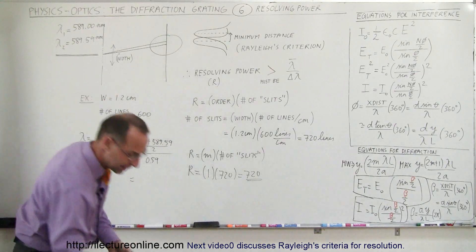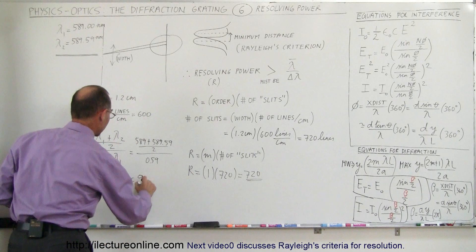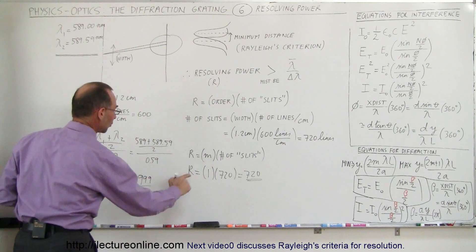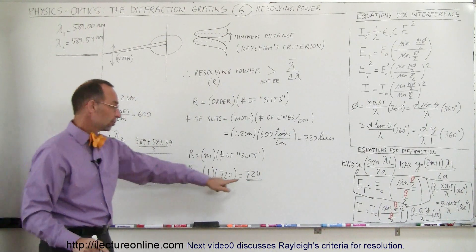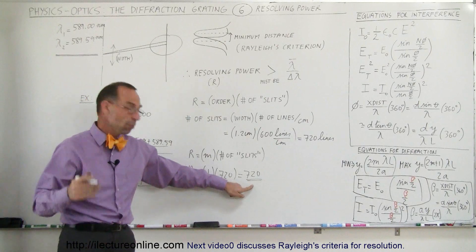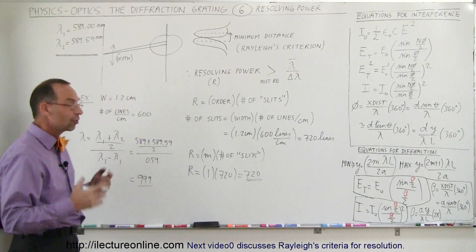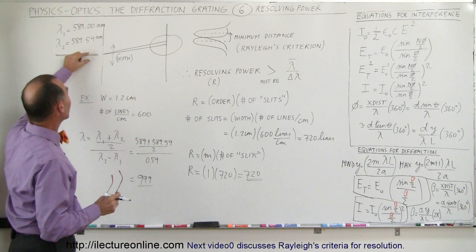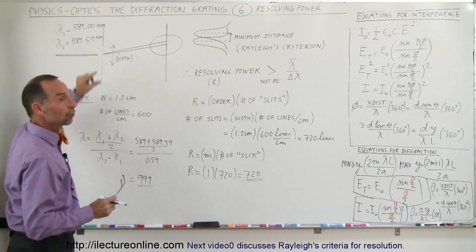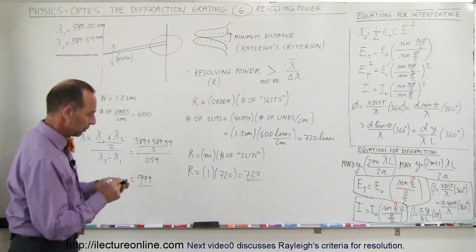The result is 999. So the question is: is the resolving power greater than 999? The answer is no — 720 is smaller than 999. Therefore, in the first order, you're not going to be able to see the separation of the two lines of sodium. But what about the second order?